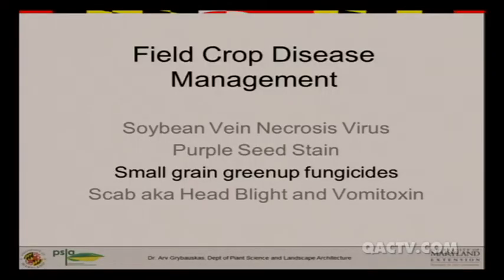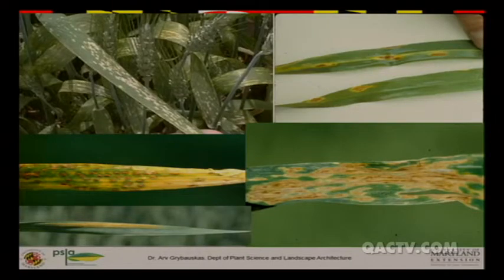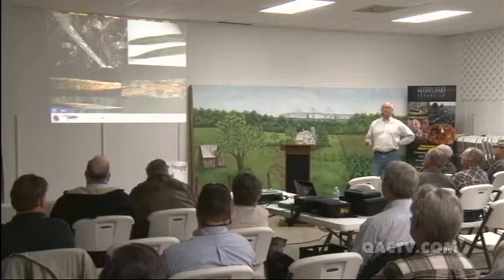Now I want to get to small grains and talk about something people have been asking about recently — is there a role for fungicides applied essentially at the same time as nitrogen applications in the springtime or herbicide applications? It kind of depends on the disease as to whether or not you have potential to see a response. Our major foliar disease problems in small grains that respond well to fungicides all have slightly different properties bearing on whether an early fungicide program would really help.